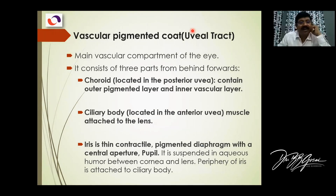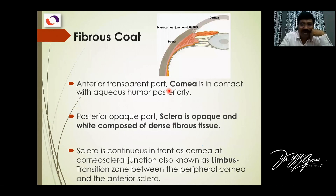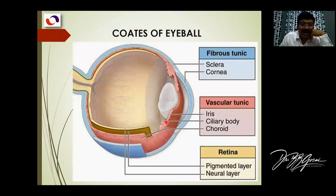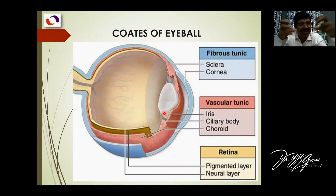Now coming to the vascular coat, which is dark in color. That's why you can see through the transparent cornea the iris, which is black. It is the main vascular coat with three parts. The choroid contains blood vessels. The ciliary body contains a muscle — ciliaris — and it has fibers going to the lens. Contraction of the muscle may change the thickness of the lens, so the ciliary body is important for regulation of the thickness of the lens.